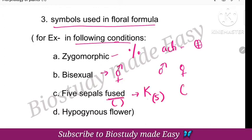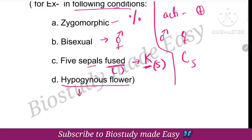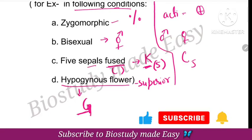C represents fused petals. For the floral formula, hypogynous flower is indicated as G with a line above the gynoecium symbol, meaning superior ovary.